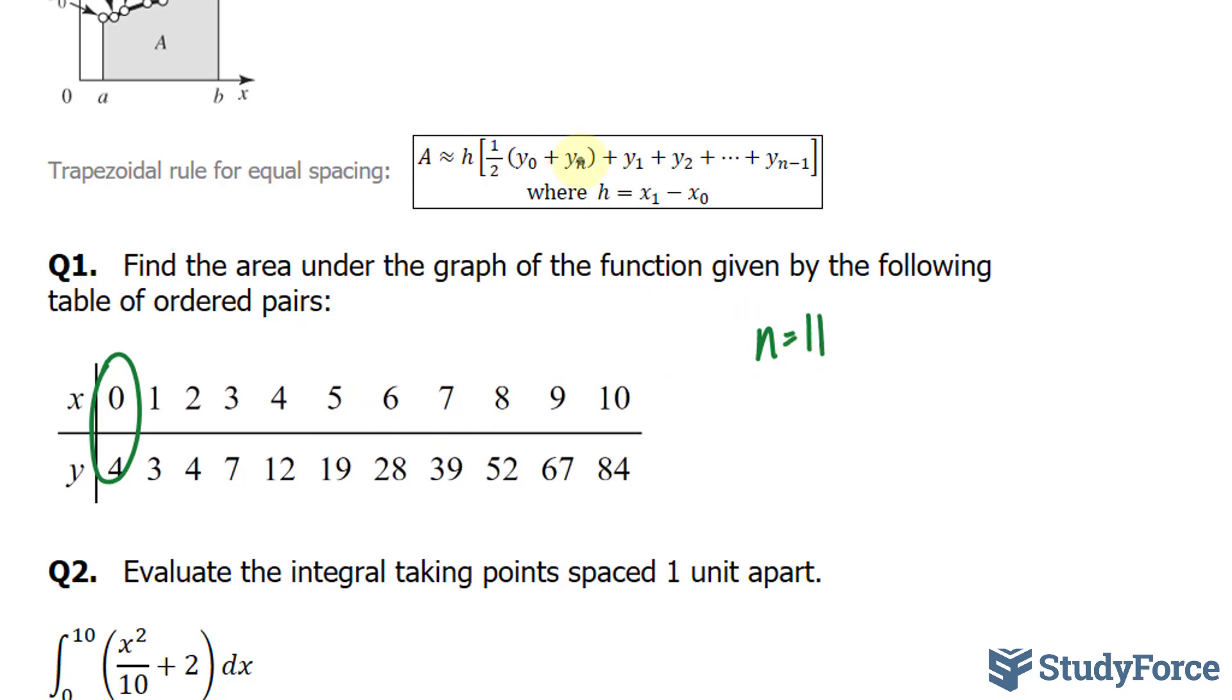So we'll take the last observation, y is equal to 11, which is 84, and add it to 4. So we have 84 plus 4 gives us 88. So that takes care of this part, and we'll be multiplying this by 1 over 2. In other words, we'll be dividing it by 2, and we end up with 44.